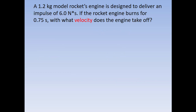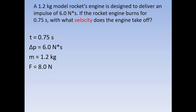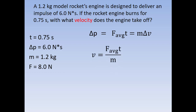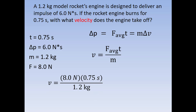With what velocity would that engine take off? We know the force, the mass, the impulse, and the time. Impulse equals average force times time, and it also equals mass times change in velocity. So force times time equals mass times delta V. Rearranging: average force times time divided by mass equals the velocity. We have 8 Newtons × 0.75 seconds ÷ 1.2 kilograms, which gives us 5 meters per second.